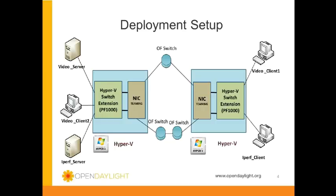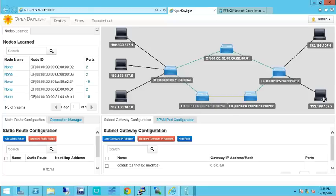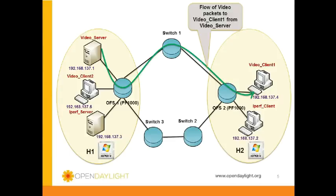The topology as read by the ODL controller is shown in the ODL GUI. For this demonstration, a video will be streamed to video client 1 and video client 2 via the OpenFlow network from the video server. The path taken by the video traffic to video client 1 is: video server, OFS1, switch 1, OFS2, video client 1. The path taken by the video traffic to video client 2 is: video server, OFS1, and video client 2.